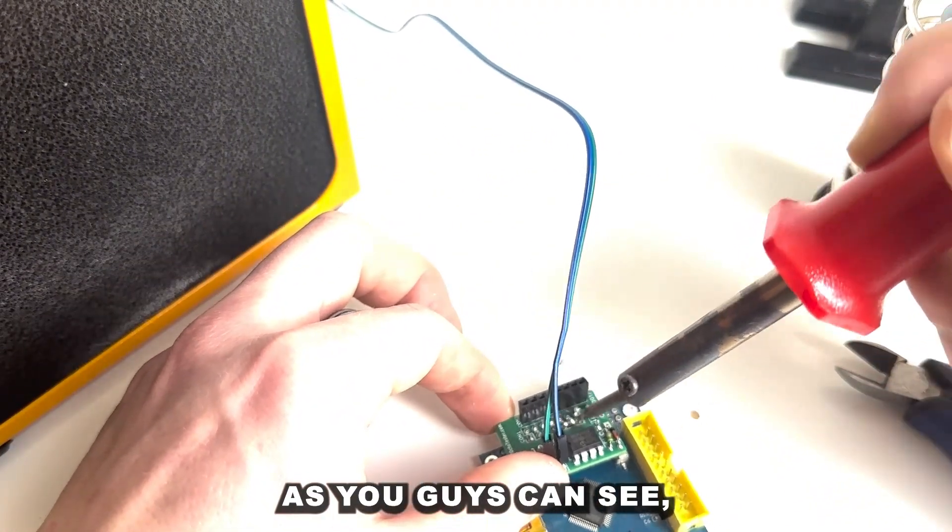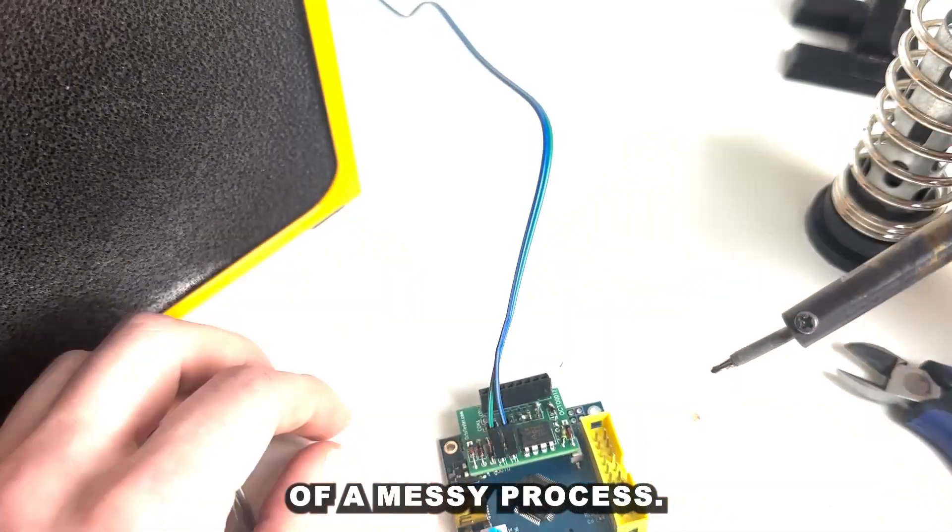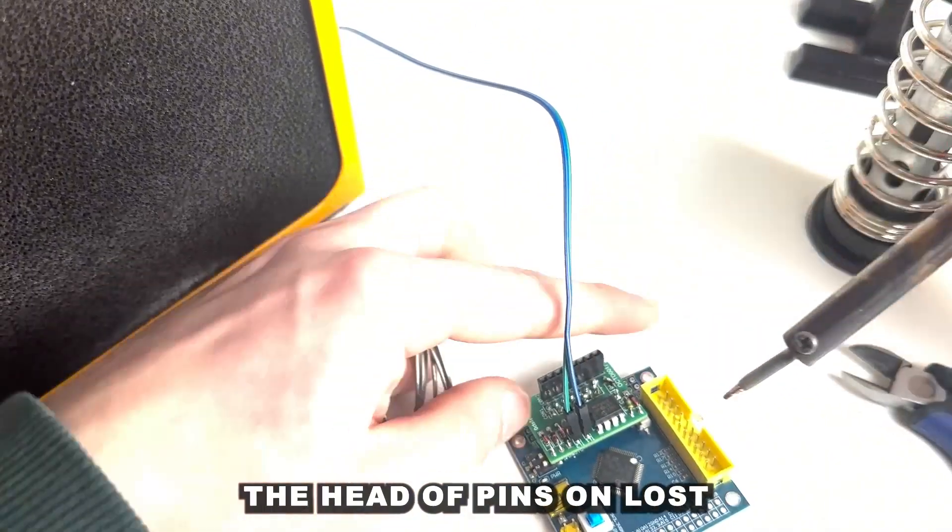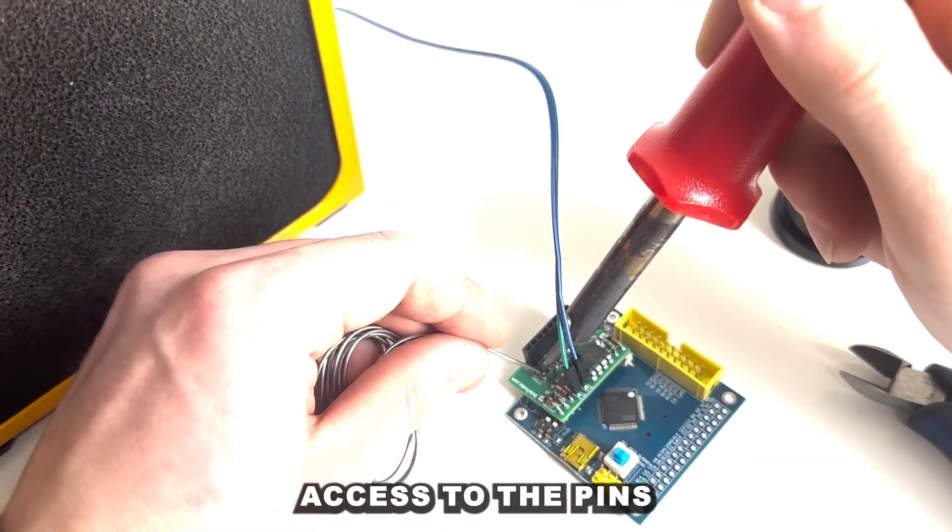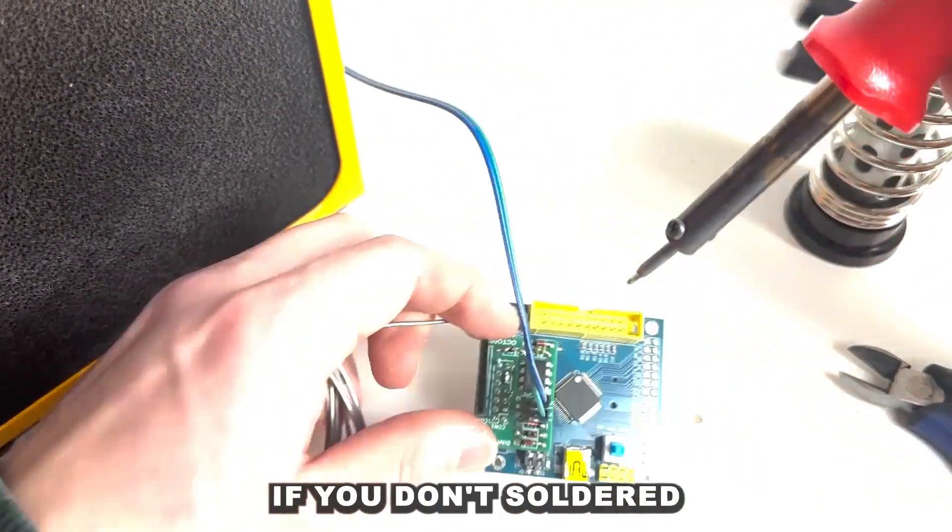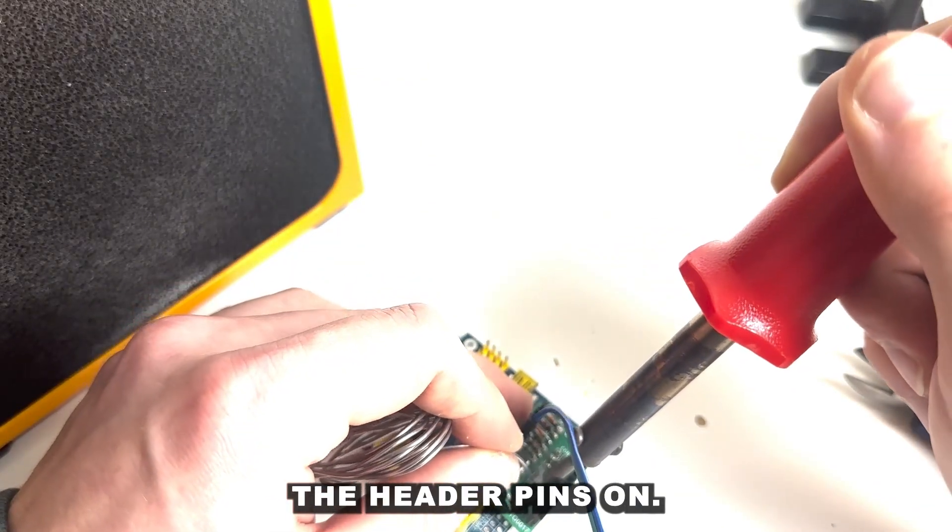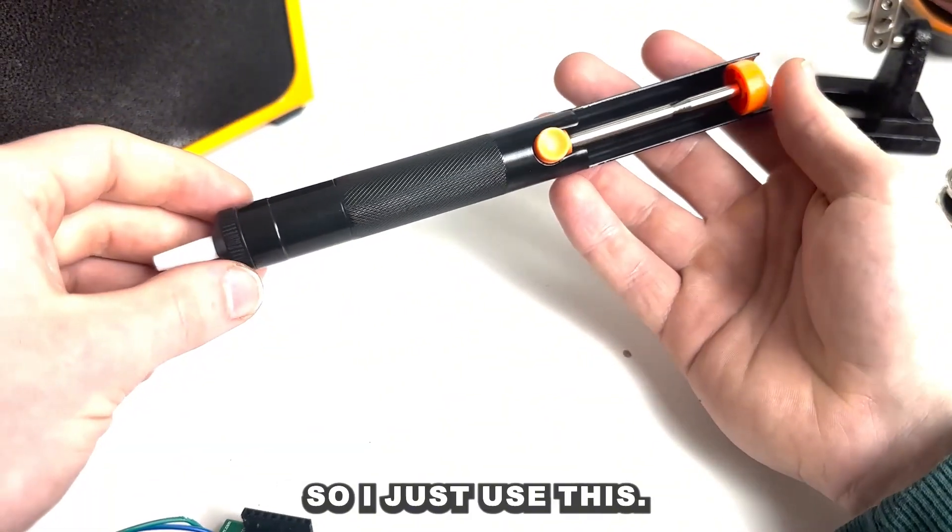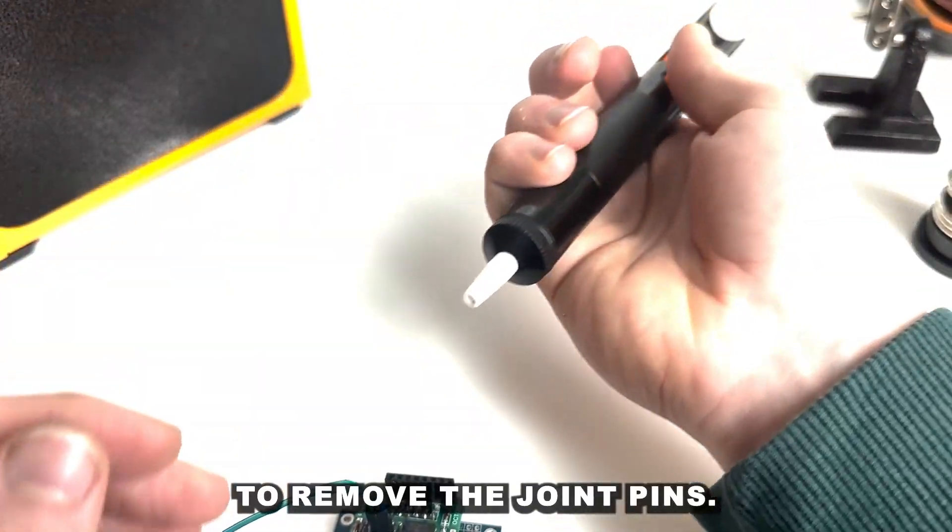As you guys can see this is a bit of a messy process so this is why I recommend to solder the header pins on last because you have easier access to the pins you are soldering if you don't solder the header pins on. Because it was so hard to solder some of the pins, some of the pins got joined together so I just used this solder sucker just to remove the joined pins.